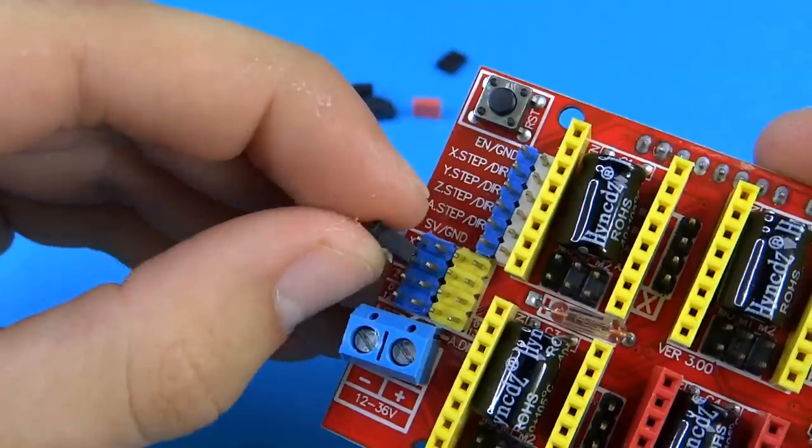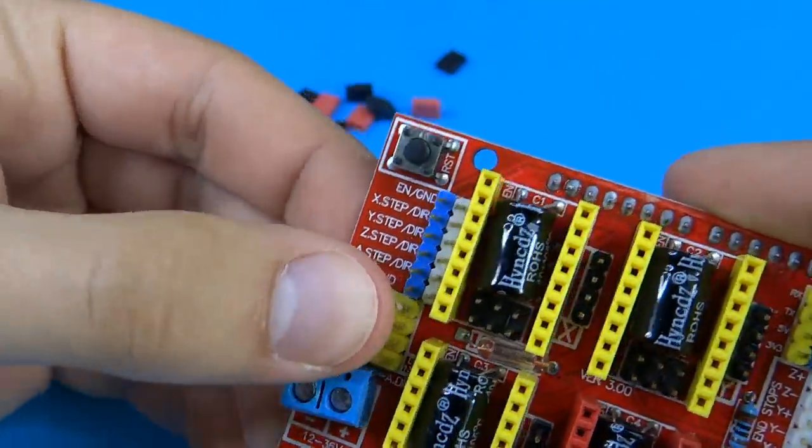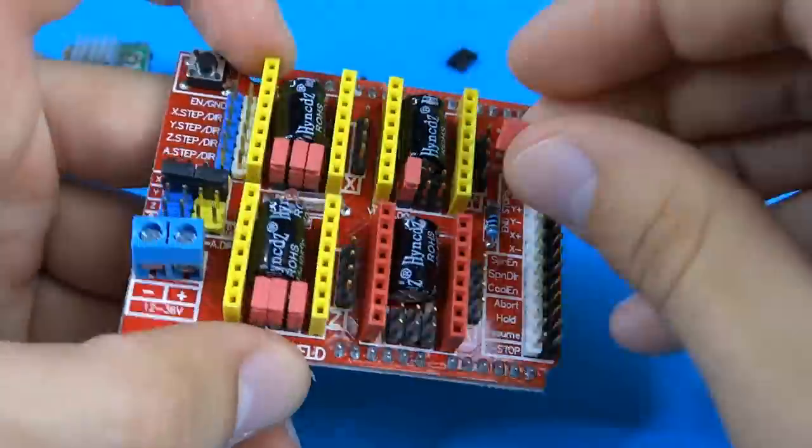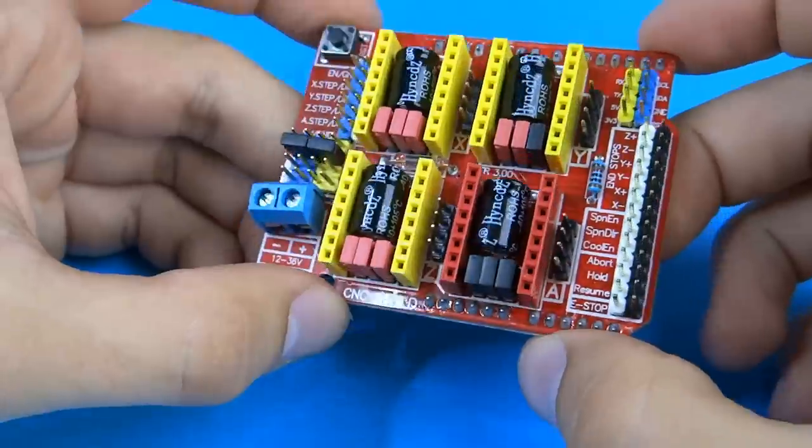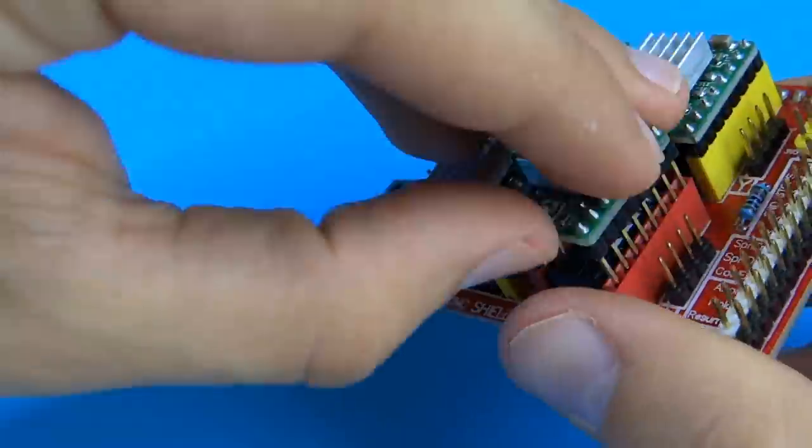Grab some jumpers and connect the breakaway header to the Arduino shield to enable microstepping like so. Use the same jumpers to mirror the y-axis on the fourth stepper driver. We have to do this because we use two stepper motors for y-axis. Connect all stepper drivers to the shield.